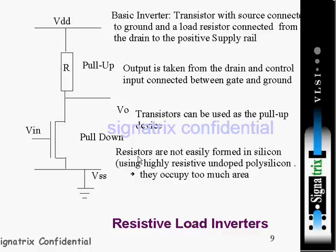Resistors are not easily formed in silicon. Using highly resistive undoped polysilicon, they occupy too much area. That is why instead of using a resistor, they use a transistor and use that transistor as a resistor, which is what the resistive load inverter approach demonstrates.